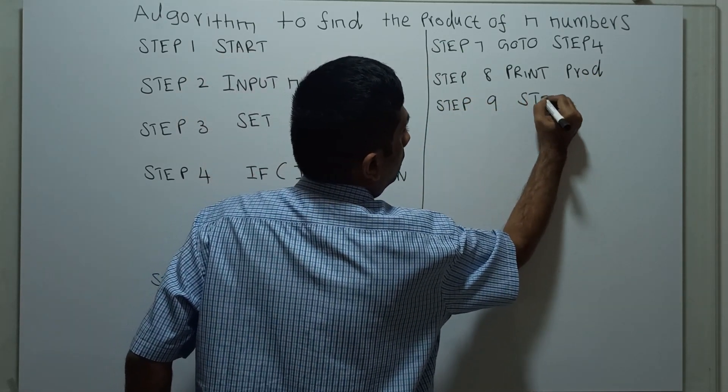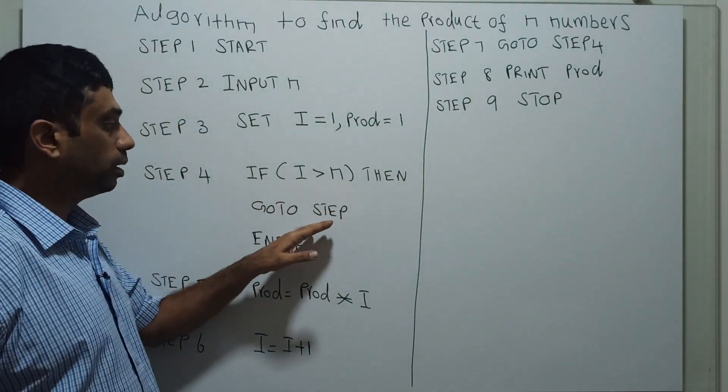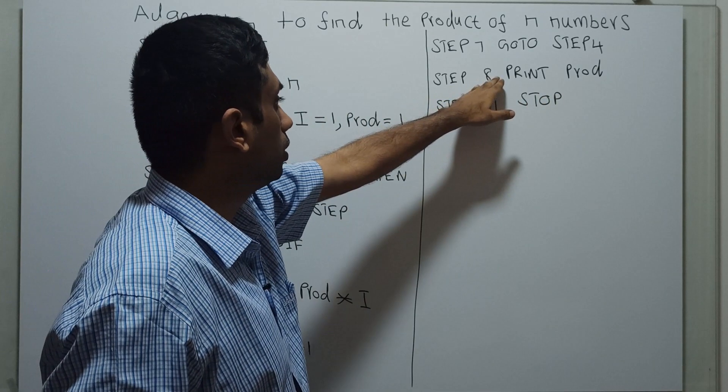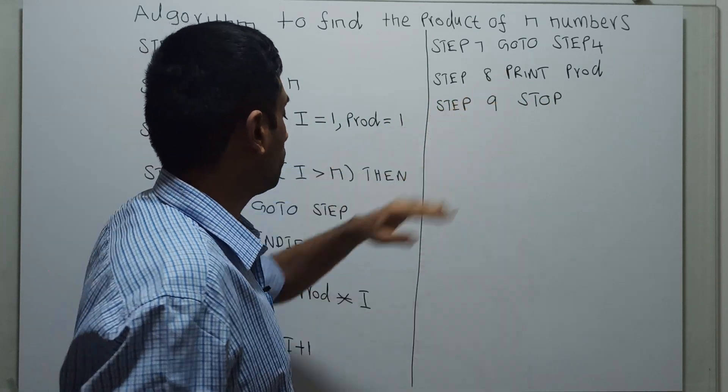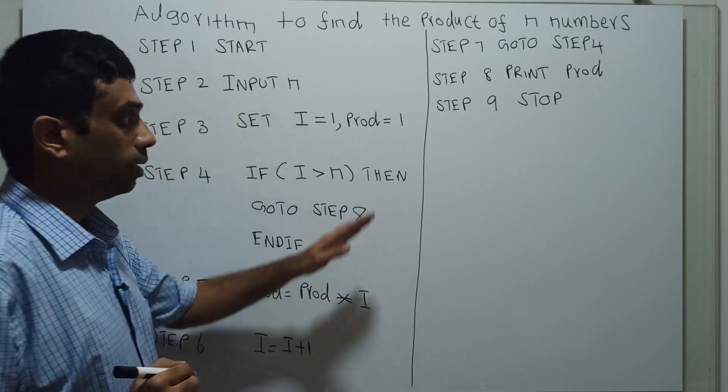Stop. End of the algorithm. So when the value of i exceeds n, I transfer control to Step 8, the result step. That's it, this is the algorithm.